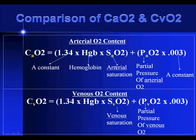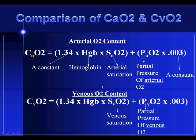Looking at the different parts of the equation: you have the constant 1.34, the hemoglobin, the saturation — which should be in decimal format — the partial pressure of oxygen, and the solubility coefficient 0.003. The same formula applies for venous O2 content; the only difference is that you use venous saturation and venous PO2. Be careful whether the question asks for arterial or venous O2 content — same formula, but different variables.